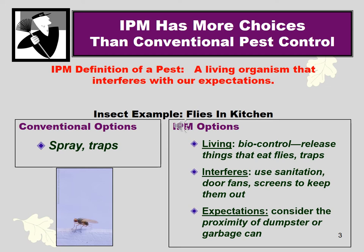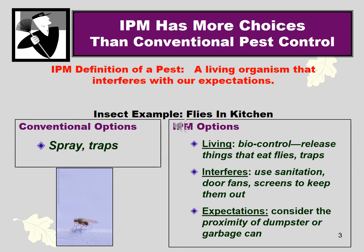For example, let's look at flies in your kitchen. Conventional methods would be spraying with something like RAID, using sticky traps, or a fly swatter. The IPM options would be living methods like biocontrol — releasing predators of flies — or something that interferes with their life cycle: cleaning, not leaving food out, sanitation, door fans to keep air moving out so they can't get in, and screens. Also consider expectations — maybe a compost pile or dumpster near your kitchen is the reason they're getting in, and you might want to move that. These are bigger-picture ways to reduce the pest without jumping right to the toxic spray.